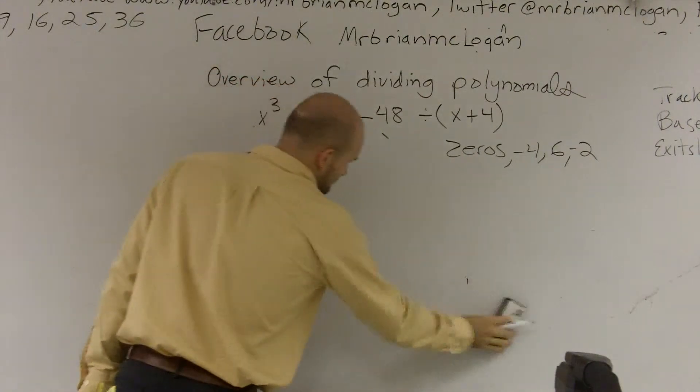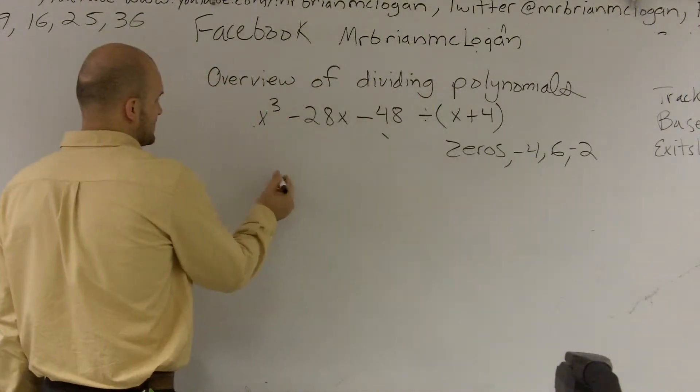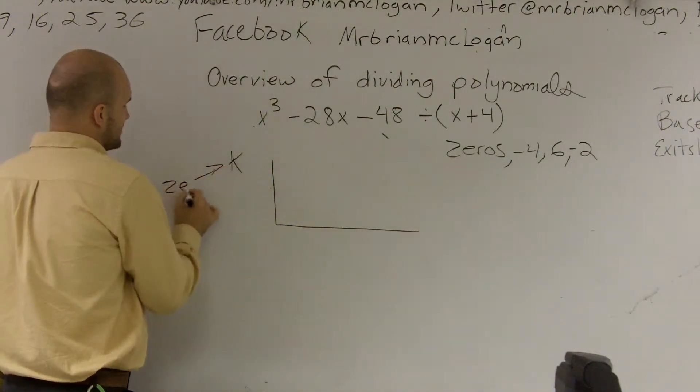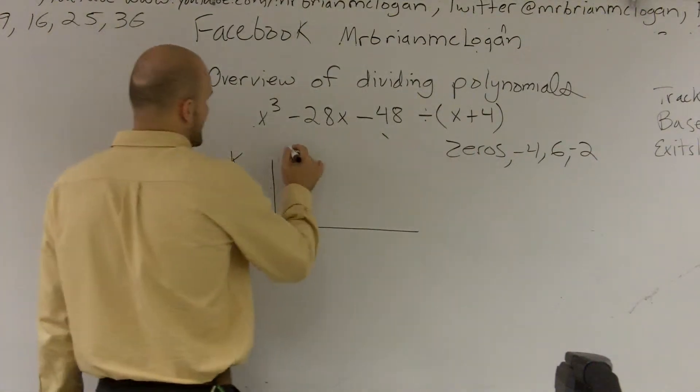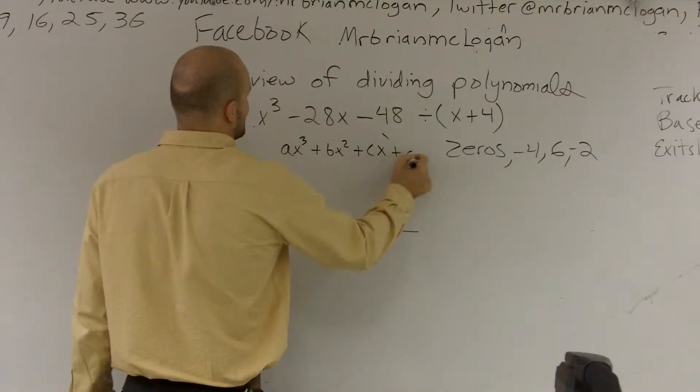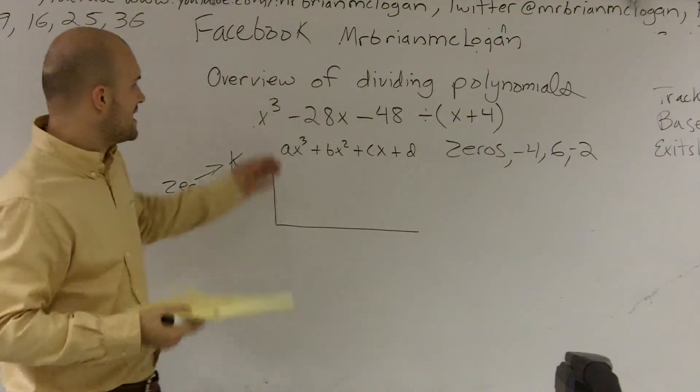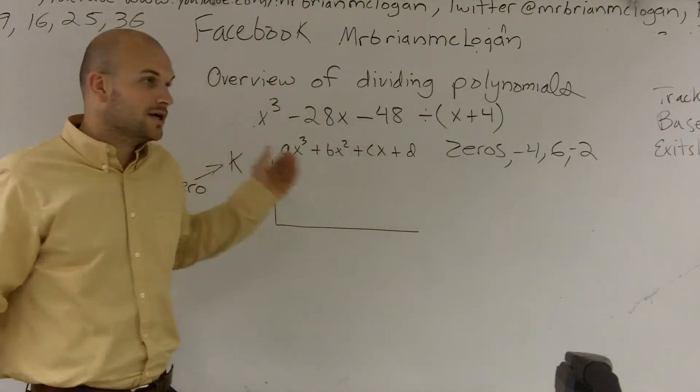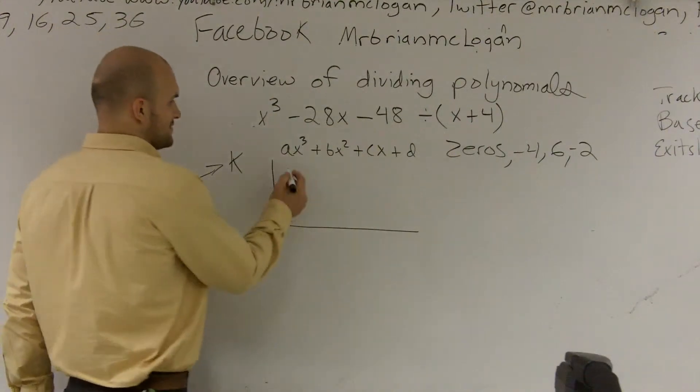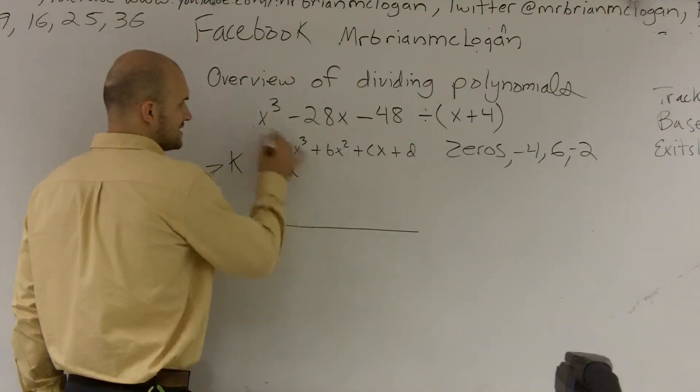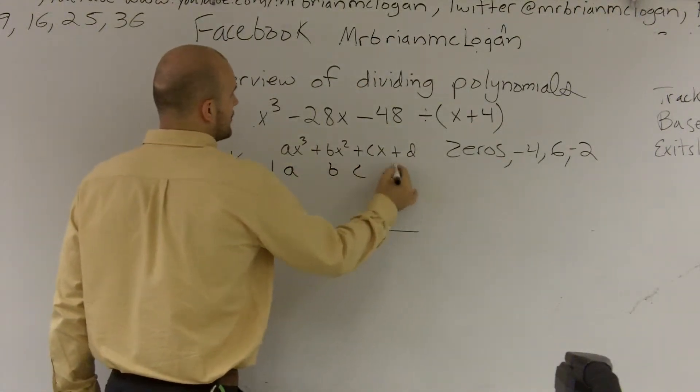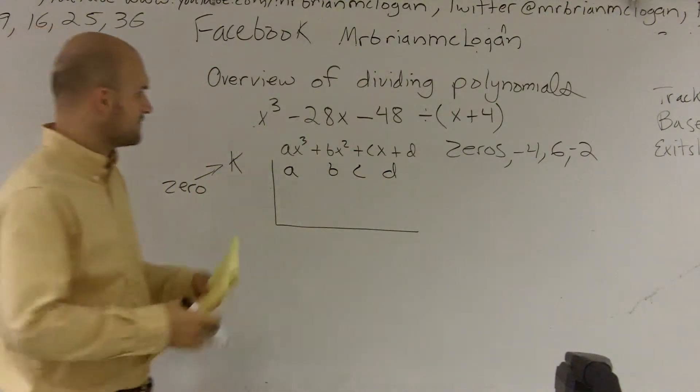Now, the other method that we look at is synthetic division, where you have k. And k is going to be your zero, not your factor, but your zero. And then you have ax cubed plus bx squared plus cx plus d. I mean, you don't have to, it's not limited to a third power polynomial. You could be even higher or even less. But for this case, I'm going to use a third power polynomial. Exact same thing. You have to have, you're going to take the coefficients of your terms and plug them in.